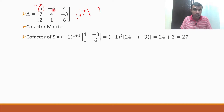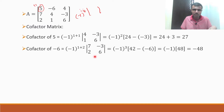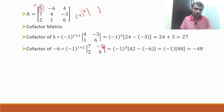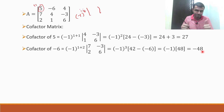Position of -6 is first row, second column. So cofactor of -6 is (-1)^(1+2) × det[7, -3; 2, 6] = (-1)(42 - (-6)) = (-1)(48) = -48. Remember: (-1) to the power of an odd number gives -1. So the cofactor of -6 is -48.